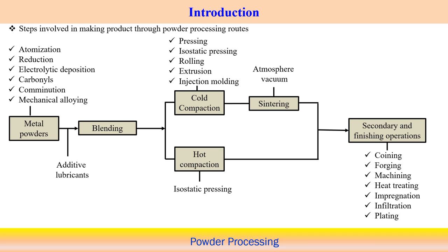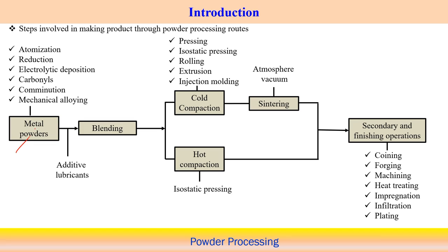For steps involved in making a product through the powder processing route, starting with metallic powders: there are many methods to produce metal powders such as atomization, reduction, electrolytic deposition, carbonyls, and mechanical alloying — all methods from which we can manufacture metal powders.